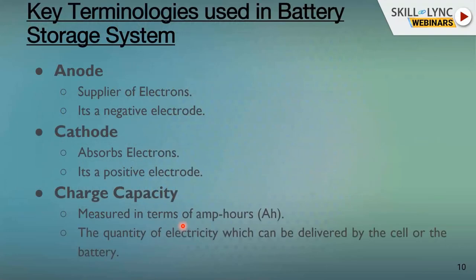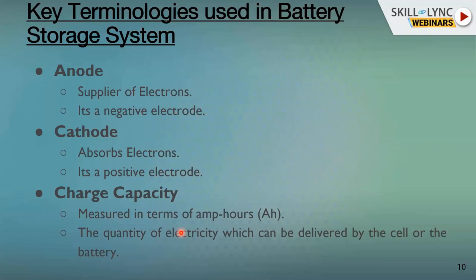Let's understand battery storage systems through some key terminologies. Anode is the negative electrode, rich in electrons — it supplies electrons. Cathode is the positive electrode, capable of absorbing electrons. Charge capacity is the quantity of electricity that can be delivered by the cell or battery, usually expressed in ampere hours (Ah). When you buy a battery, the capacity is expressed in Ah — meaning how much current the battery can provide and for what duration.